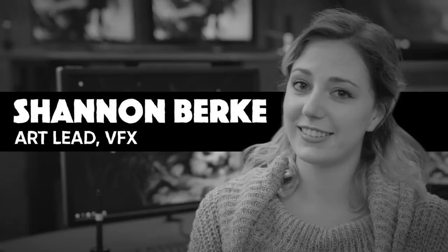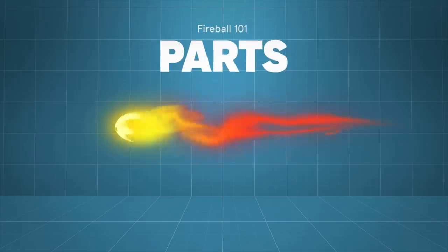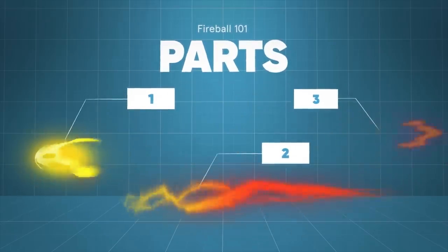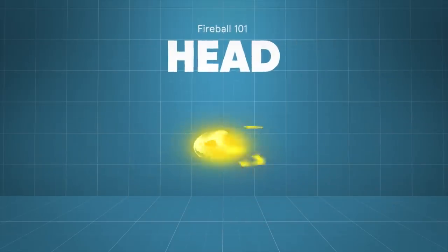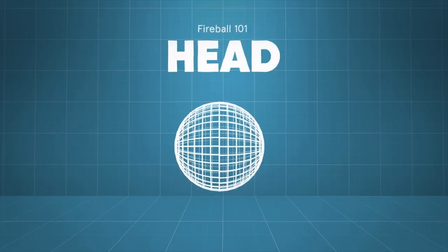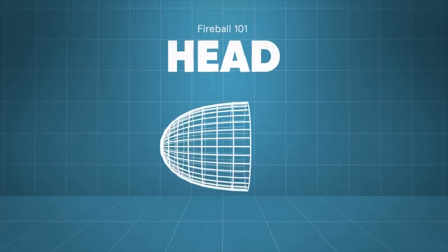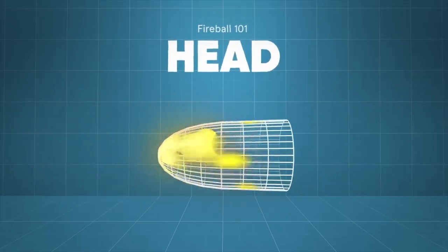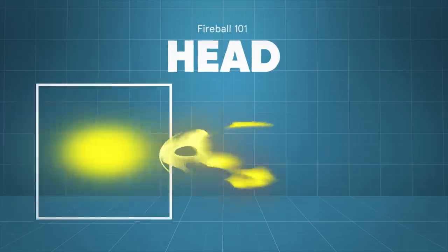A fireball has three parts: the primary, secondary, and tertiary reads. The eye follows each of those in order. The head of the fireball is the primary read, so it needs to catch the eye first. To make that stand out, you'll need something that draws the eye, like a bright glow texture on a camera-facing card. From there, you can surround that glow with a mesh using half of a sphere, and have an animated fire texture scroll across that mesh, which will help it feel like it's in motion and burning brightly.